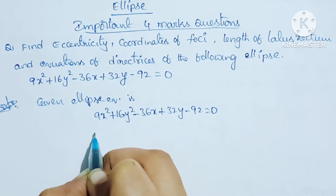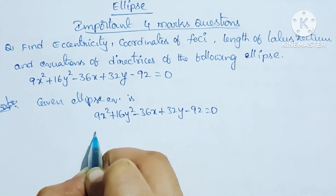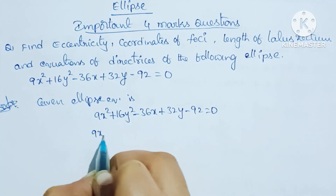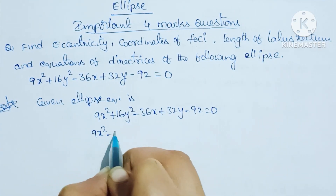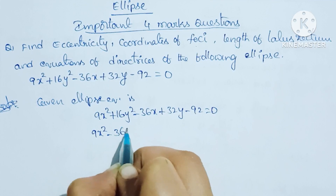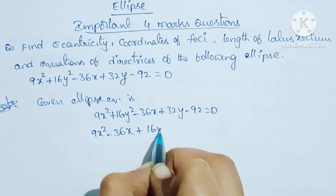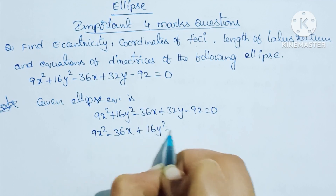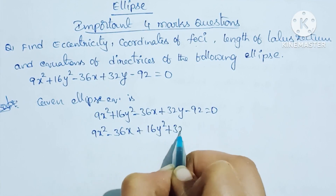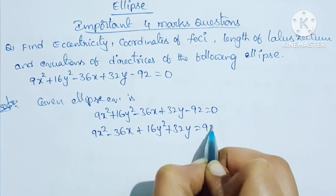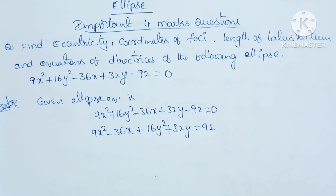So, let us simplify. We rearrange as: 9x² - 36x + 16y² + 32y = 92.